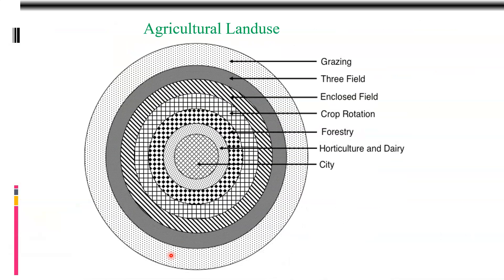Let us see the full figure again. In the center we have the city — the marketplace. Then we have horticulture and dairy, meaning perishable goods. Then forestry. Then farming with crop rotation — rotation year, enclosed field year, three-field year — and finally grazing. These zones are the same as what was described, now shown in the full figure.